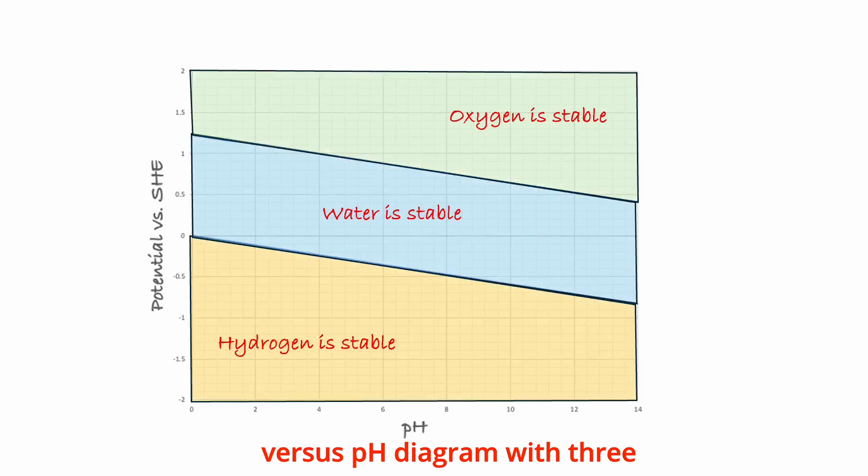This leads to a potential versus pH diagram with three distinct regions. In the central region, water is stable since both hydroxide ions and hydrogen ions are stable, so they combine and form water molecules. Above this line, oxygen is the stable species. Below this line, hydrogen gas is the stable species. This exemplifies the simplest type of Pourbaix diagram, that of water, which identifies the conditions under which water remains stable.